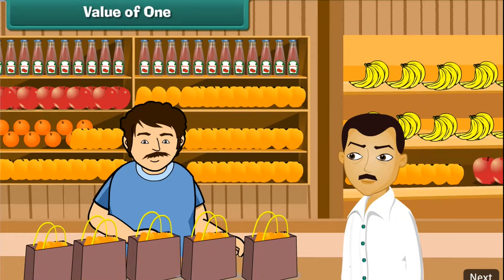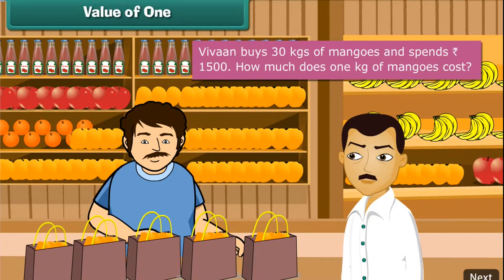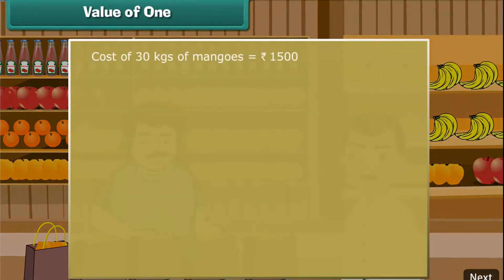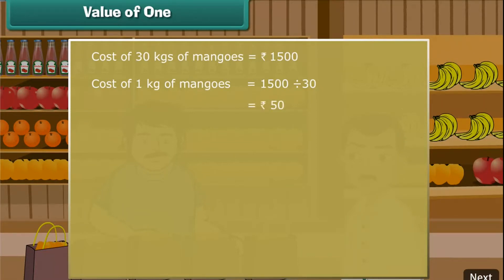Value of One. Vivan buys 30 kg of mangoes and spends 1,500 rupees. How much does 1 kg of mangoes cost? Cost of 30 kg of mangoes is 1,500 rupees. Cost of 1 kg of mangoes is 1,500 divided by 30, that is 50 rupees. A kilogram of mangoes costs 50 rupees.